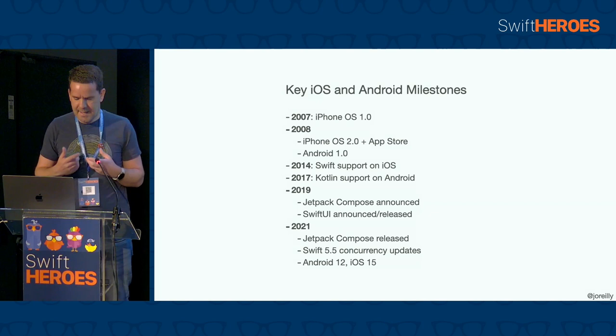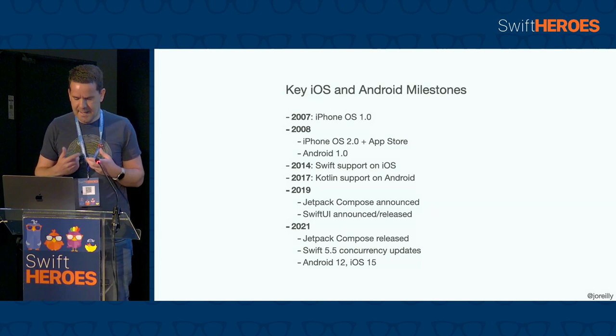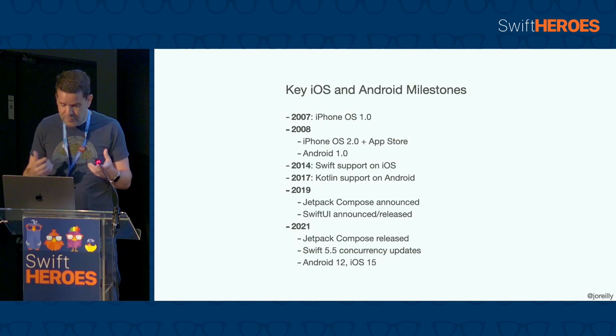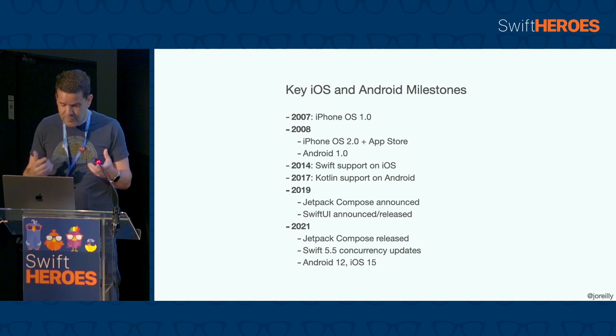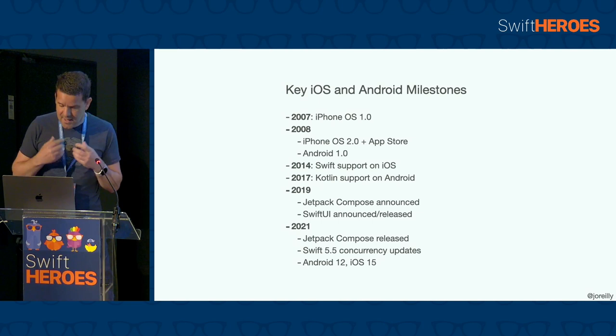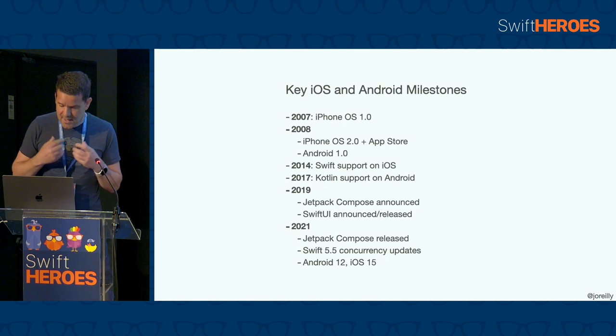Fast forward to 2014 — Swift is now supported on iOS and three years later, Kotlin on Android. Languages that are significantly more similar to each other than Java is to Objective-C. 2019 was a key year for UI development on both platforms. Jetpack Compose was announced at Google IO, though it wouldn't be formally released until 2021. SwiftUI was announced at WWDC and released later that year. And lastly, we saw the announcement of the Swift 5.5 concurrency functionality at WWDC 2021.